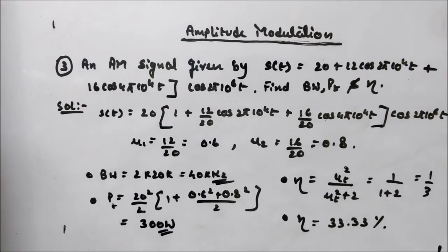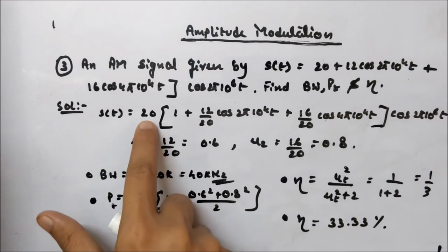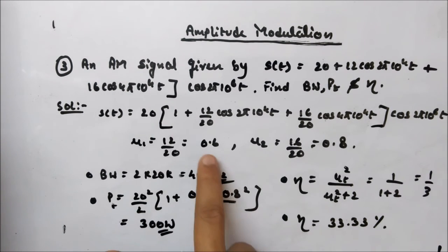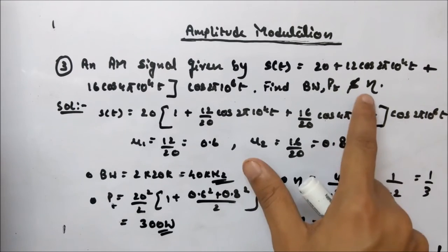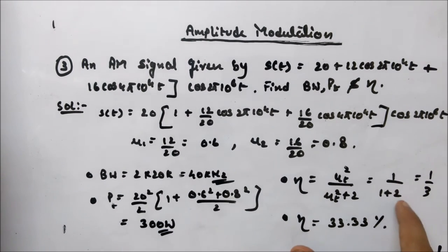To calculate total power PT = PC·(1 + muT²/2), where PC = 20²/2 = 200 W and muT² = mu1² + mu2² = 0.6² + 0.8² = 0.36 + 0.64 = 1.0. So PT = 200 × (1 + 1/2) = 200 × 1.5 = 300 W. For efficiency eta = muT²/2 divided by (1 + muT²/2) = 0.5/1.5 = 1/3 = 33.33%.